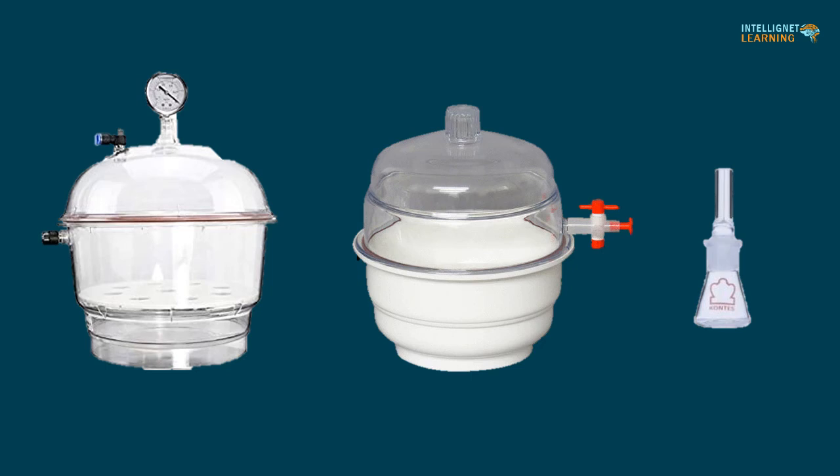Where drying in a capillary stoppered bottle under vacuum is directed in the individual monograph, use a bottle or tube fitted with a stopper having a 225 plus or minus 25 micrometer diameter capillary and maintain the heating chamber at a pressure of 5 millimeters or less of mercury. At the end of the heating period, admit dry air to the heating chamber, remove the bottle, and with the capillary stopper still in place, allow it to cool to room temperature in a desiccator before weighing.